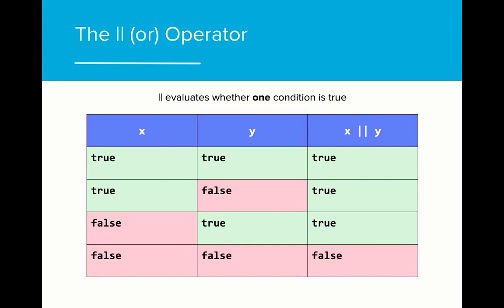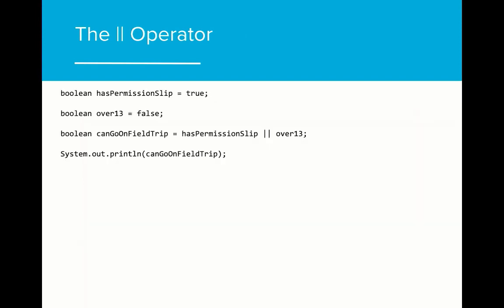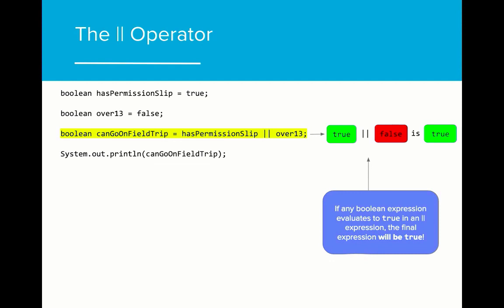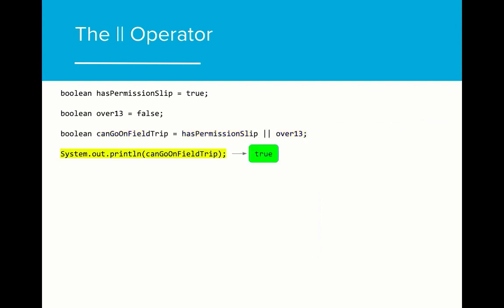The OR operator allows us to evaluate whether any of the conditions in a Boolean expression are true. If any condition using OR is true, then the final expression will evaluate to true. This is another table worth taking a deeper look at. Let's look at an example. In this program, we are evaluating whether or not someone can go on a field trip. The student can go on the trip if they have a permission slip or they are over 13 years old. We can set this up by using an OR statement. Can go on field trip will evaluate to true if the student has permission slip or is over 13. Because the student has permission slip, the resulting Boolean expression evaluates to true as one of the two conditions is true. Can go on field trip will evaluate to true when printed, so this student can go on the trip.